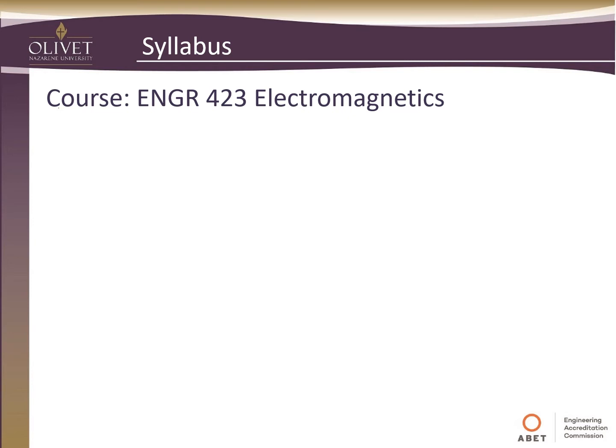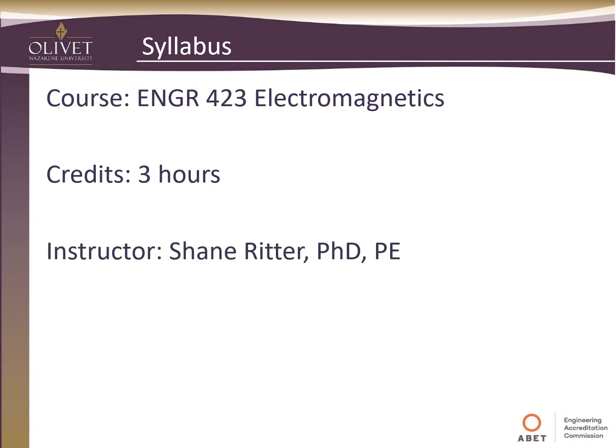This is Engineering 423 Electromagnetics, a course requirement for all electrical engineering and computer engineering majors. This is a three-hour course, meaning three contact hours per week. There is no lab associated with it — just lectures, homework, and exams.